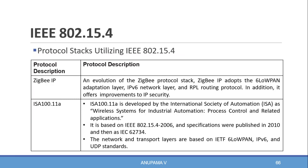ISA 100.11a is developed by the International Society of Automation as a wireless system for industrial automation, process control, and related applications. It is based on IEEE 802.15.4 2006 version. The network and transport layers are based on IETF 6LoWPAN, IPv6, and UDP standards.